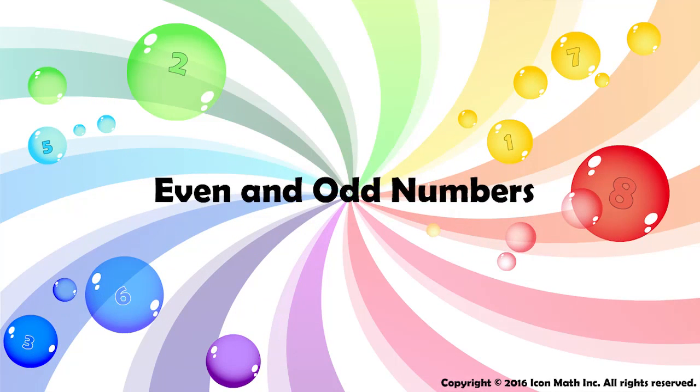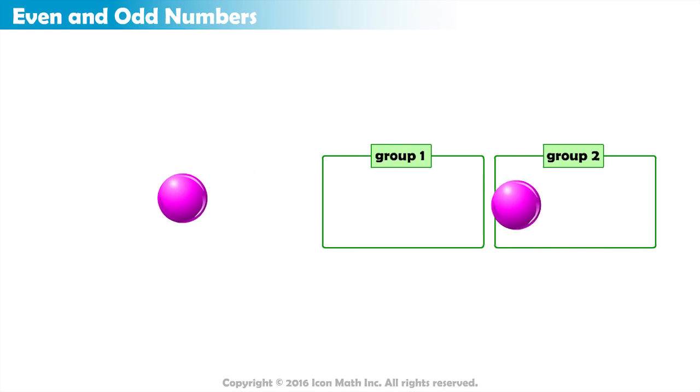Even and odd numbers. If we have two counters, we can evenly divide them into two groups.